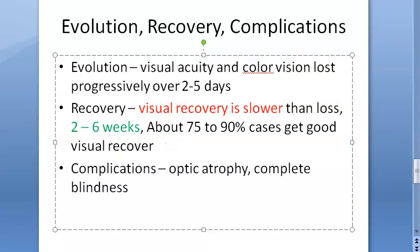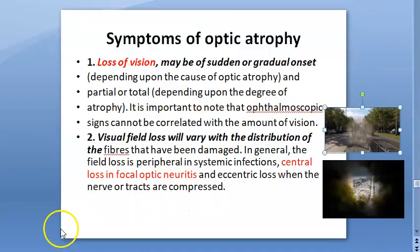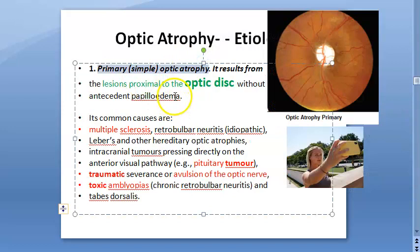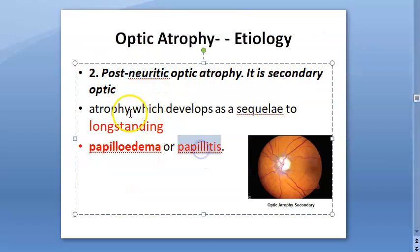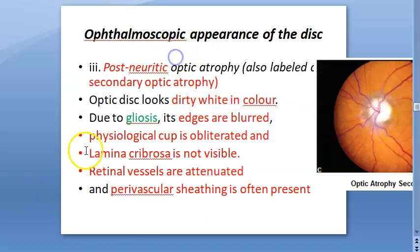Complications include optic atrophy — optic nerve degeneration and complete blindness. After long-standing papillitis, secondary optic atrophy can occur. Primary optic atrophy is related to disc problems, while secondary optic atrophy follows papillitis.